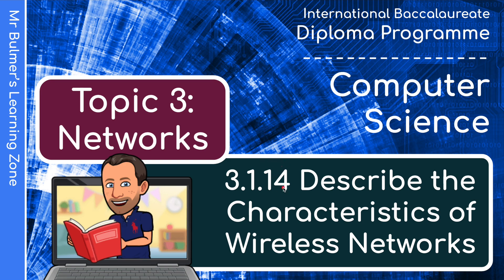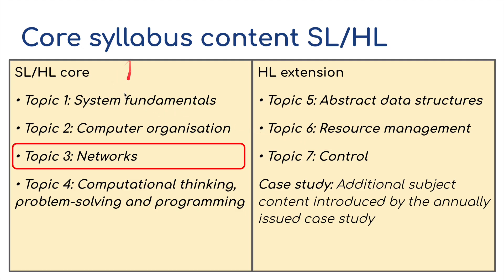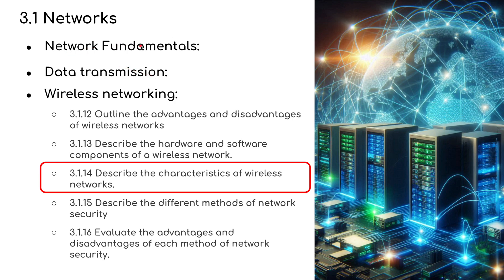Hello and welcome back to video 14 for topic 3, Networks. Here we're going to be describing the characteristics of wireless networks. This is for the IB Diploma in Computer Science — the third of the four core topics. We've done network fundamentals and data transmission; now we're halfway through wireless networks.